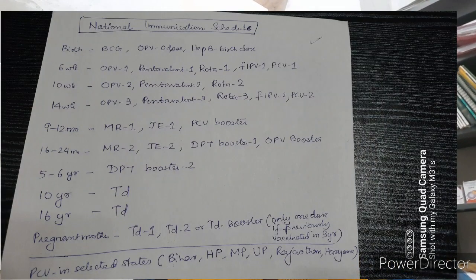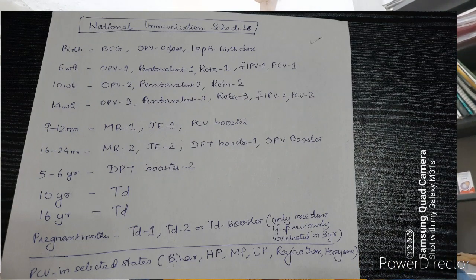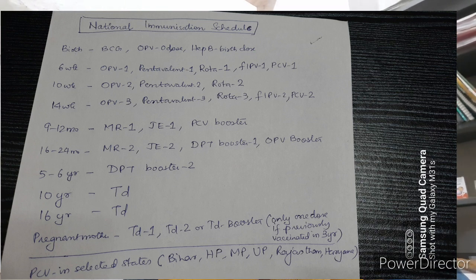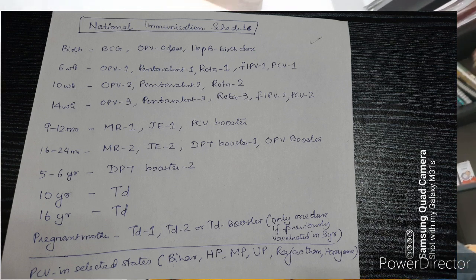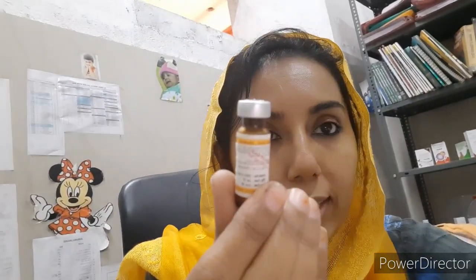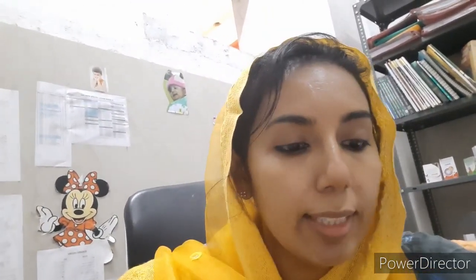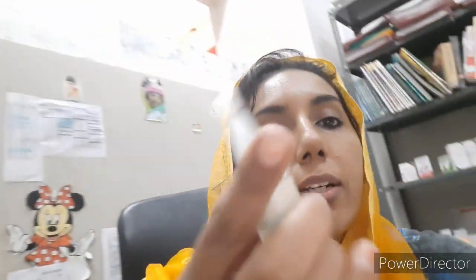First, you have to revise the national immunization schedule and also the IAP immunization schedule — they will ask you questions accordingly. The first vaccines given at birth are BCG, Hepatitis B, and OPV. This is the BCG vaccine — amber colored bottle, route of administration is intradermal into the left deltoid area, given at birth. It is a live attenuated type of vaccine.